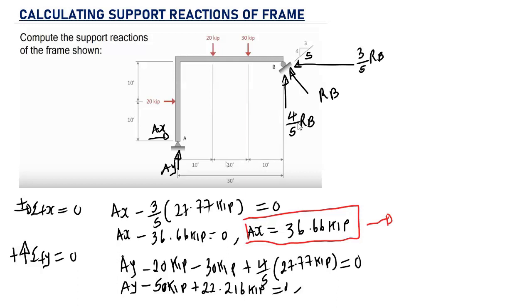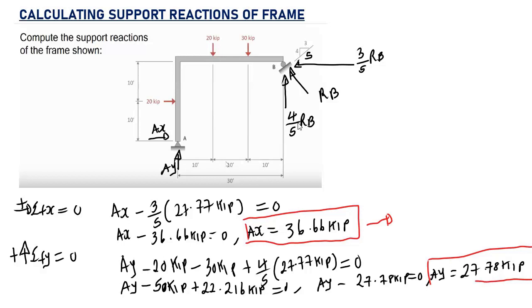Solving, AY = 50 − 22.216 = 27.78 kip. Because the value is positive, AY acts upward as assumed. Always write your units to avoid mistakes.